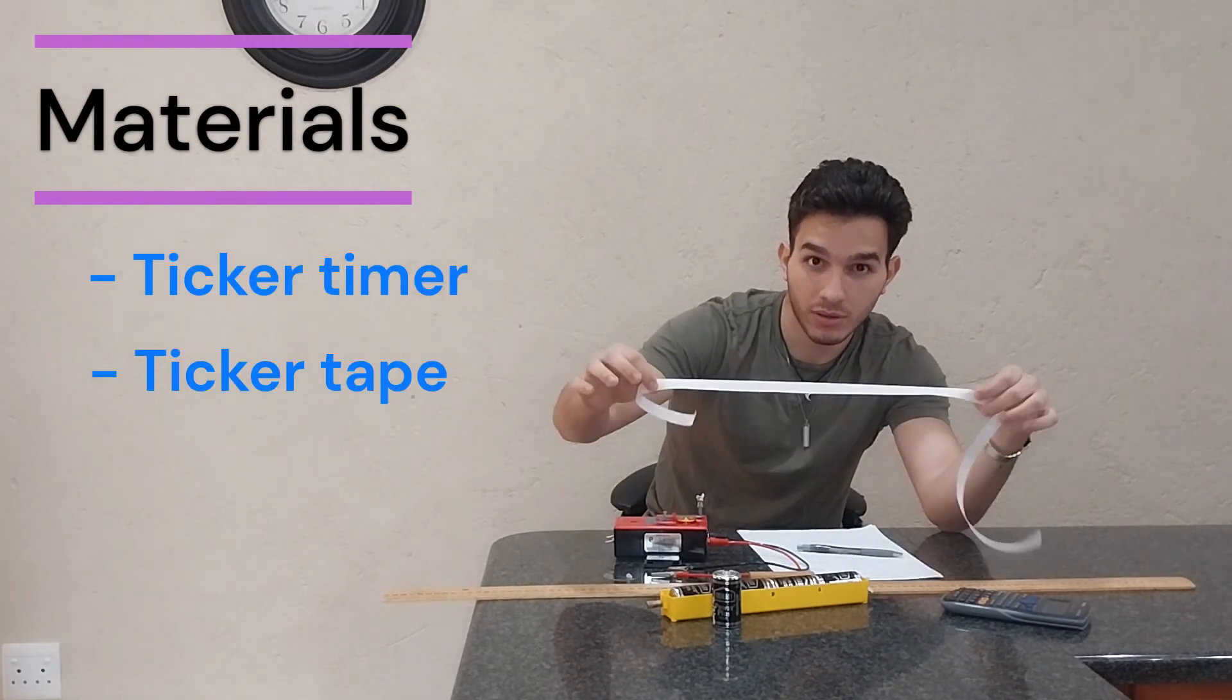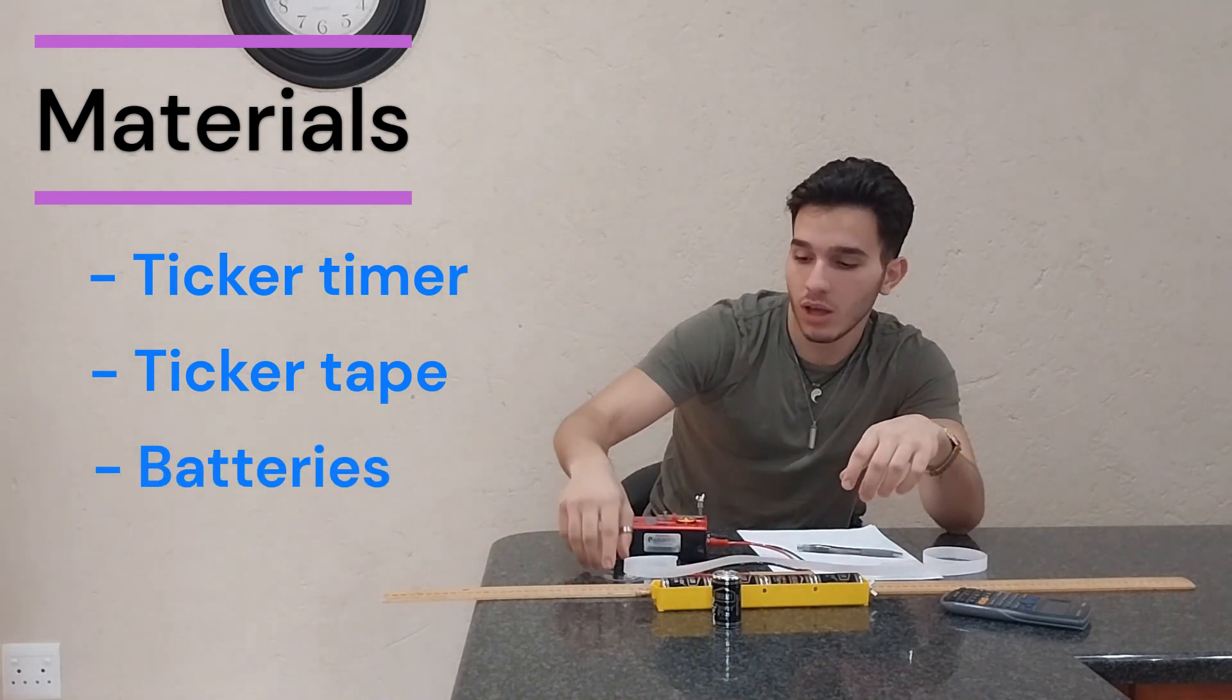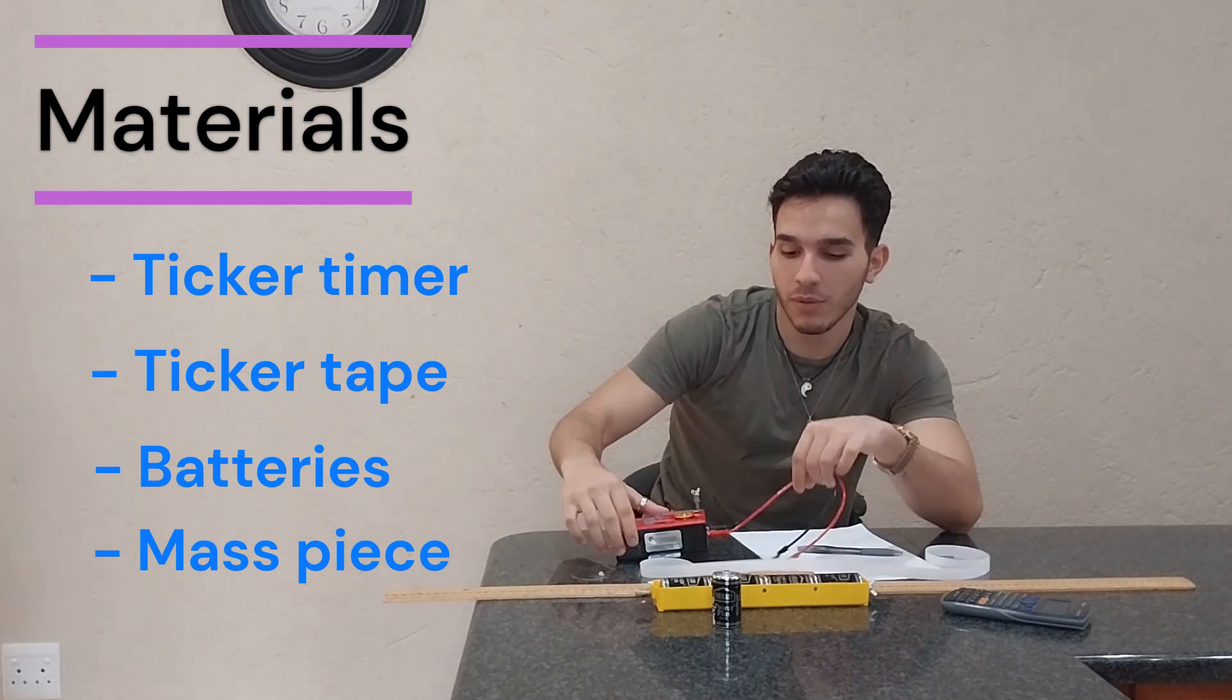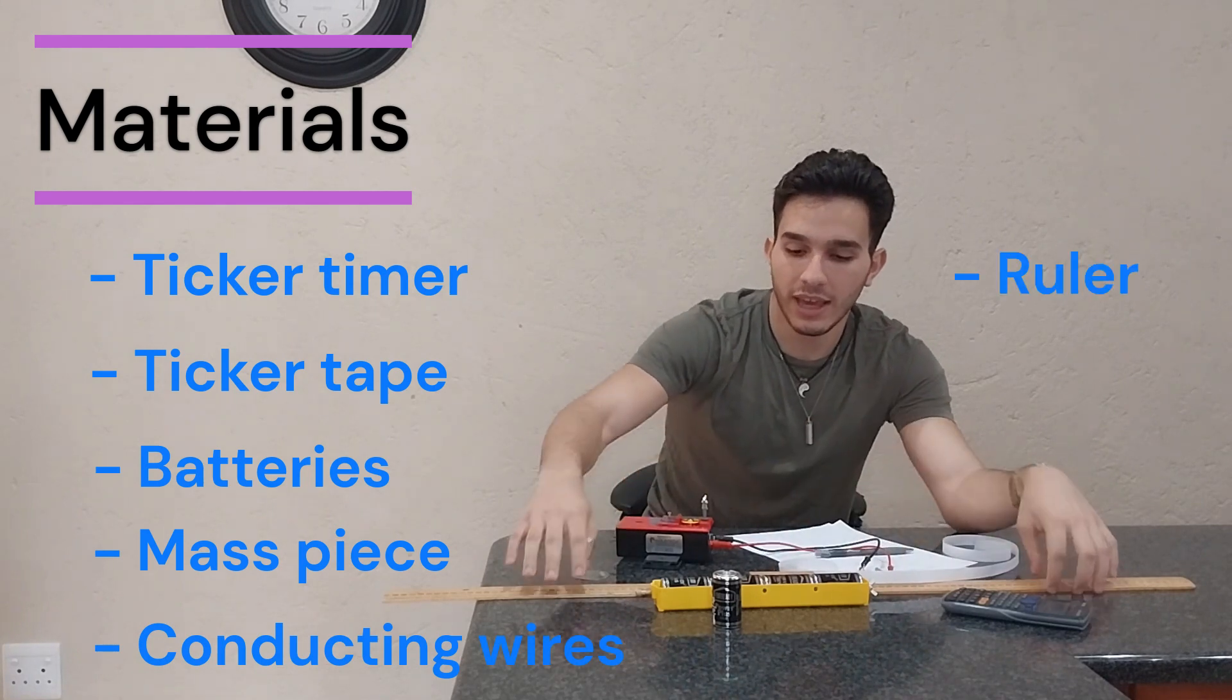A ticker tape and batteries for the ticker timer to work, a mass piece - any mass piece - conductive wires, and a ruler.